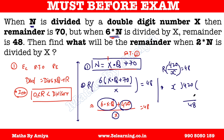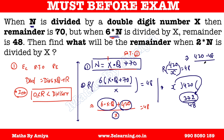If you subtract the new remainder from 6 times the original remainder: 6 × 70 minus 48 equals 420 minus 48, which is 372. This means 372 must be divisible by X.